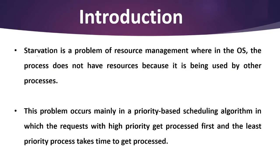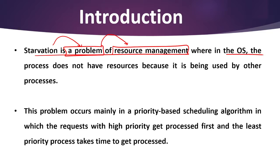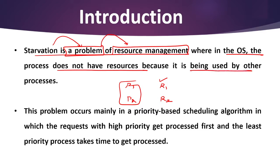Starvation is a problem of resource management. You should note that starvation is a problem related to resource management, where in the operating system a process does not have resources. For example, process P1 wants resource R1 and process P2 wants resource R2, but these processes do not have these resources because they are being used by some other process — P3 is using R1 and P4 is using R4. That is why P1 and P2 cannot get R1 and R2. This problem is called starvation.